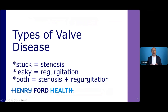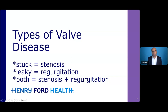Now that we've covered the anatomy, let's talk about types of valve disease. Valves can get stuck — that's called stenosis. They can get leaky — that's called regurgitation. Or they can be both stenotic and regurgitant. So, stuckness of the aortic valve is called aortic stenosis, and leakiness of the mitral valve is called mitral regurgitation.